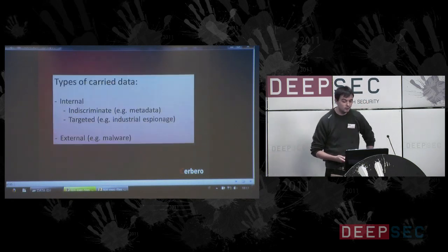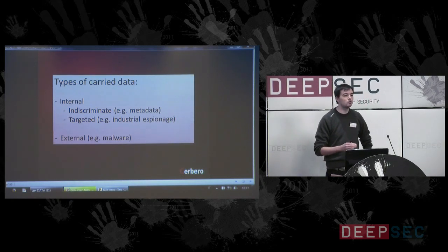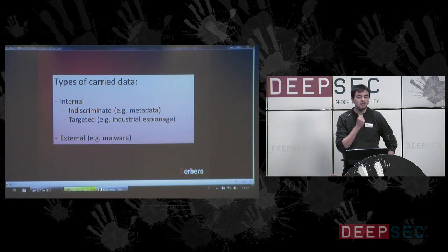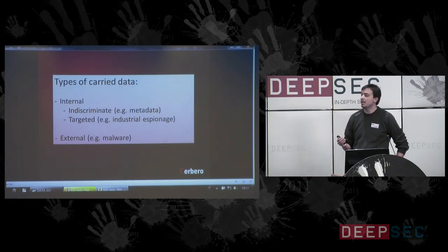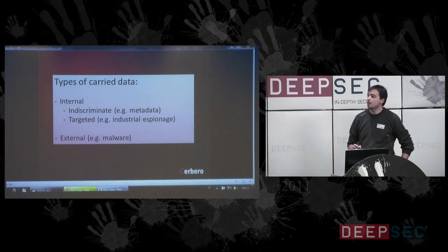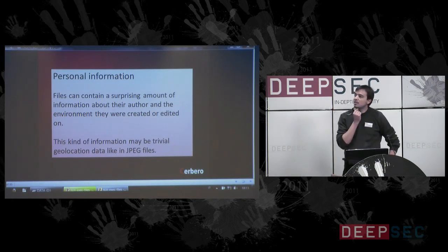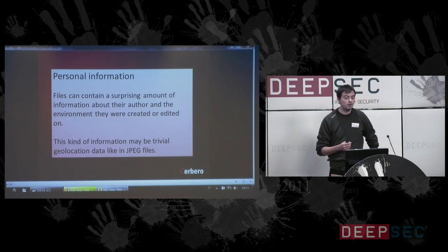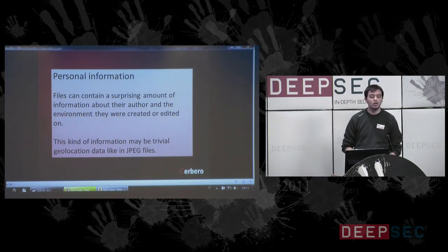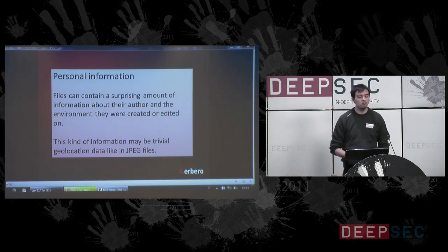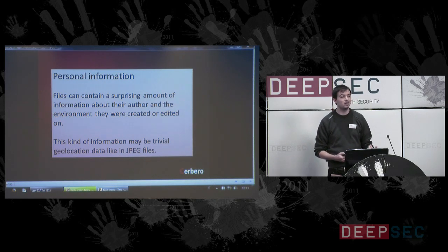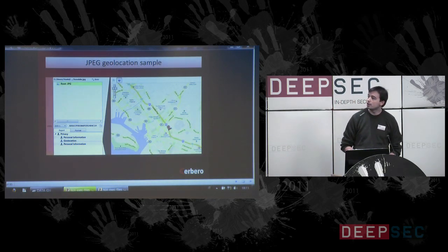Data carriage: this is when a document is used to transport data. This data can be either internal — like indiscriminate metadata — or targeted, or even external, like malware. When we have internal data, it can be personal information. Files can in fact contain a surprising amount of personal information, like the author who created or edited the document, and this kind of information can include geolocation data, like in JPEG files.